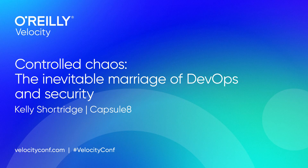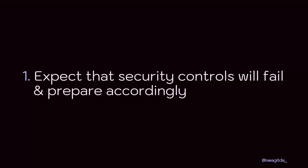So what are the principles of this chaos security engineering? First, you have to expect security controls to fail, and you must prepare accordingly. System architecture has to be designed under the assumption that security controls have the potential for failure. You also have to design your architecture assuming users will fail, where failure is user behavior that doesn't adhere to secure principles.